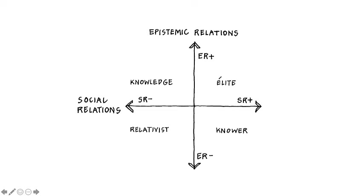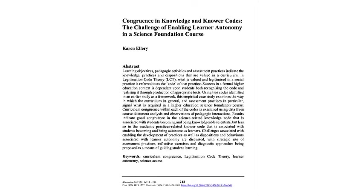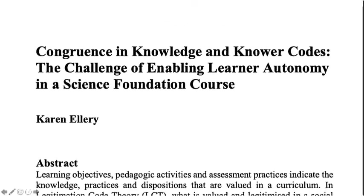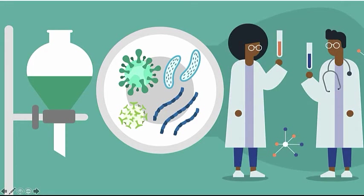Several South African scholars have used concepts from specialization to explore a range of issues in teaching and learning. One example is Karen Ellery, who in this 2018 publication looked at a science program at a South African university to understand what was needed to enable success in the discipline. Using these tools, Karen was able to distinguish two different but concurrent learning processes. First, the acquisition of principled scientific knowledge and procedures, and second, a particular kind of disposition or way of being that students needed to embody to gain access to powerful knowledge.